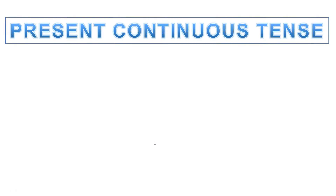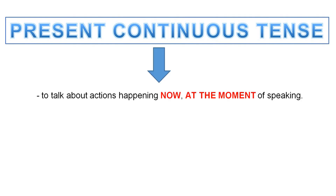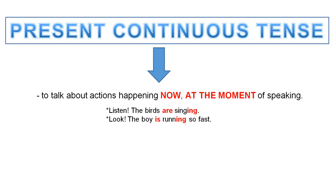So, let's see why we use the present continuous tense. We use it to talk about actions happening now, at the moment of speaking. For example, listen — the birds are singing. Look — the boy is running so fast. These actions are happening now at the time of speaking, so we use the present continuous tense to talk about them.